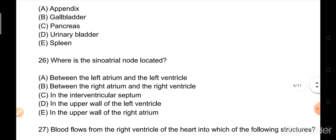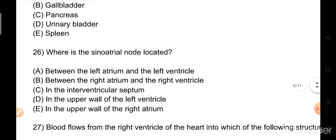Question number 26: Where is the sinoatrial node located? Options: A) between the left atrium and left ventricle, B) between the right atrium and right ventricle, C) in the interventricular septum, D) in the upper wall of the left ventricle, E) in the upper wall of the right atrium. The right answer is option E, in the upper wall of the right atrium.